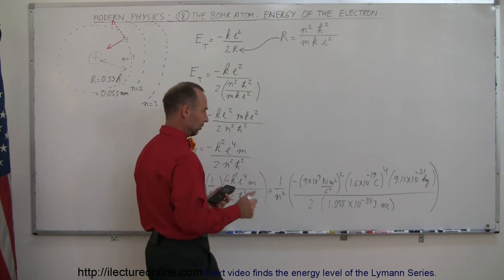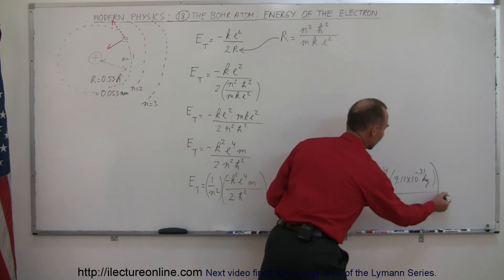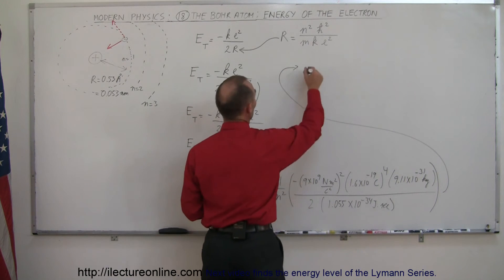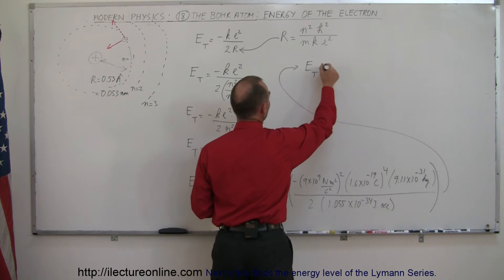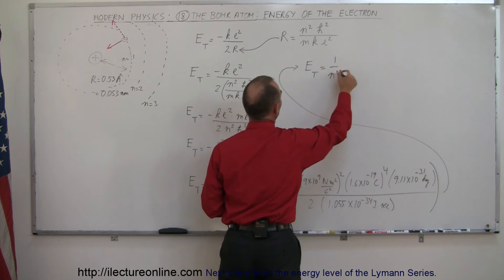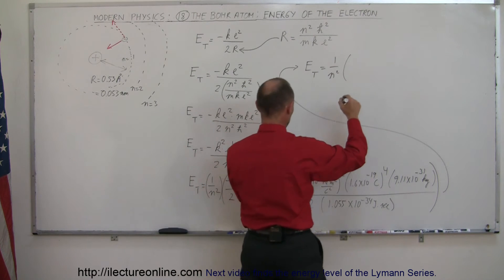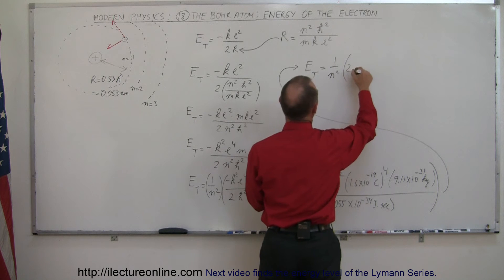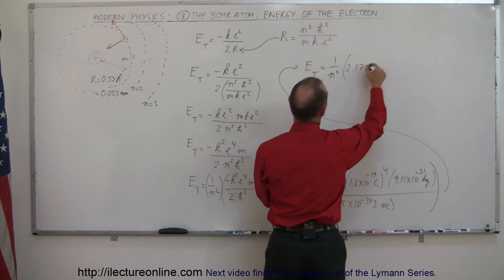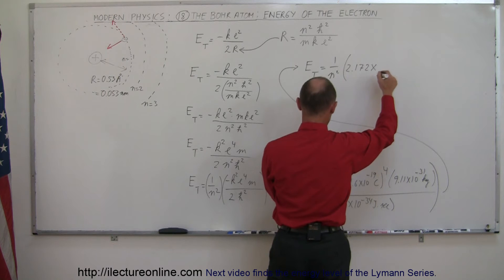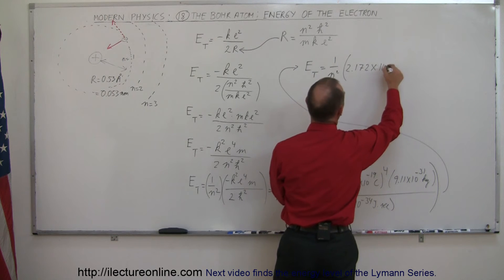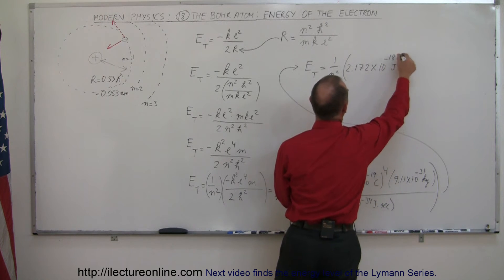So that means the total energy of the electron is equal to one over n squared times 2.172 times ten to the minus 18 joules.